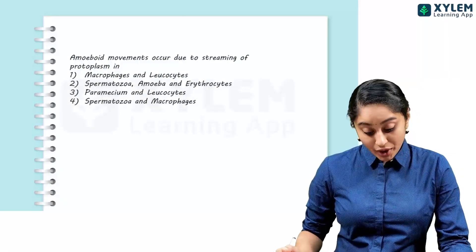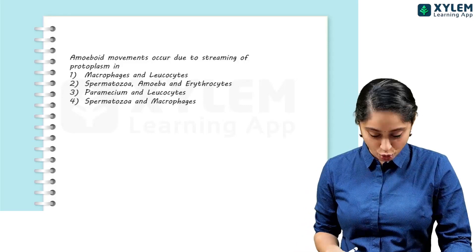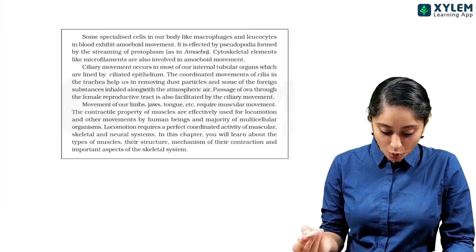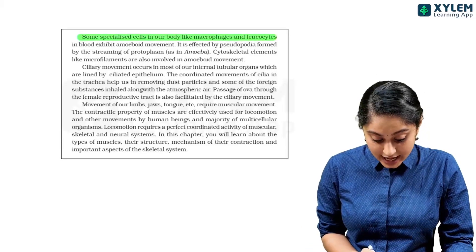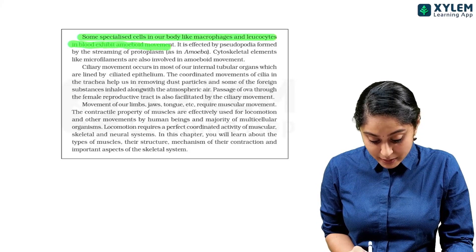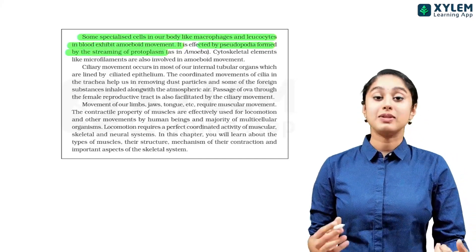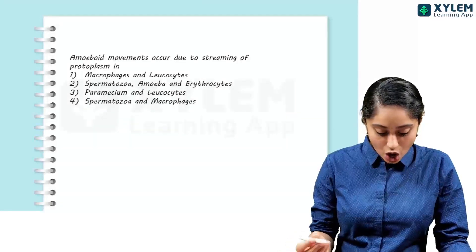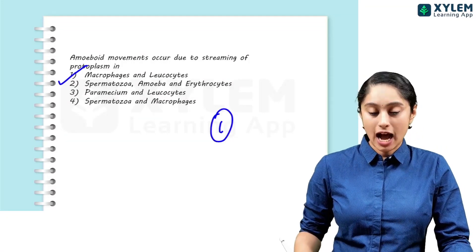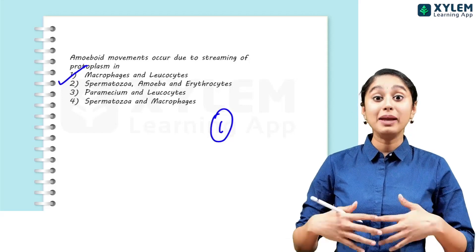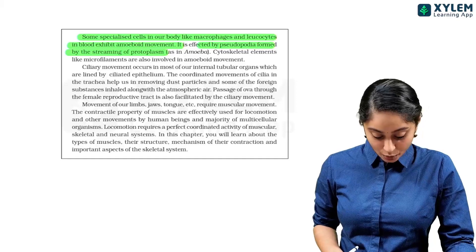Then, amoeboid movements occur due to streaming of protoplasm. Amoeboid movement - specialized cells in our body like macrophages and leukocytes in blood exhibit amoeboid movements. So the pseudopodia is formed and by streaming of the protoplasm as in amoeba. So we got our answer here, option 1, macrophages and leukocytes will be the answer.